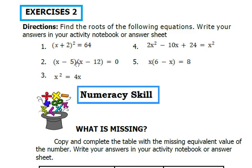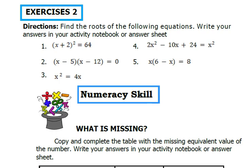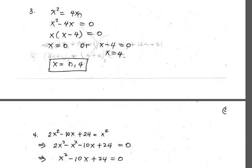Number 2: quantity x minus 5 times quantity x minus 12 equals 0. Equating x minus 5 to 0 gives x equals 5, and equating x minus 12 to 0 gives x equals 12. Number 3: x squared equals 4x. Transposing: x squared minus 4x equals 0. Factoring out x: x times quantity x minus 4 equals 0. So x equals 0 or x equals 4.